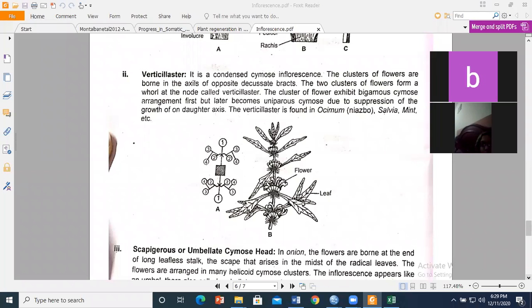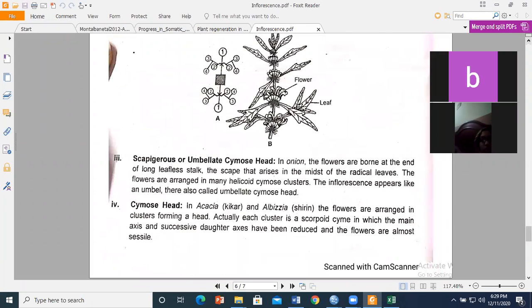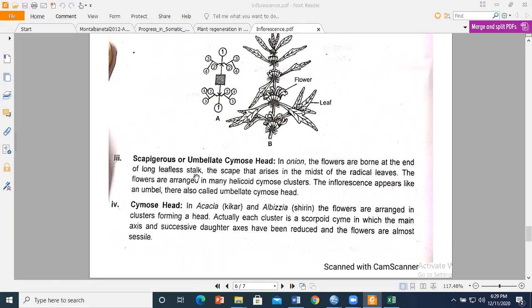The third one is umbellate cymose head. In onion, we have flowers at the end of a long leafless stalk called a scape. The scape arises in the midst of radical leaves. The flowers are arranged in many helicoid cymose clusters, and these helicoid cymose cluster groups are formed in the form of an umbellate cyme. That's why this type of inflorescence is called umbellate cymose head.